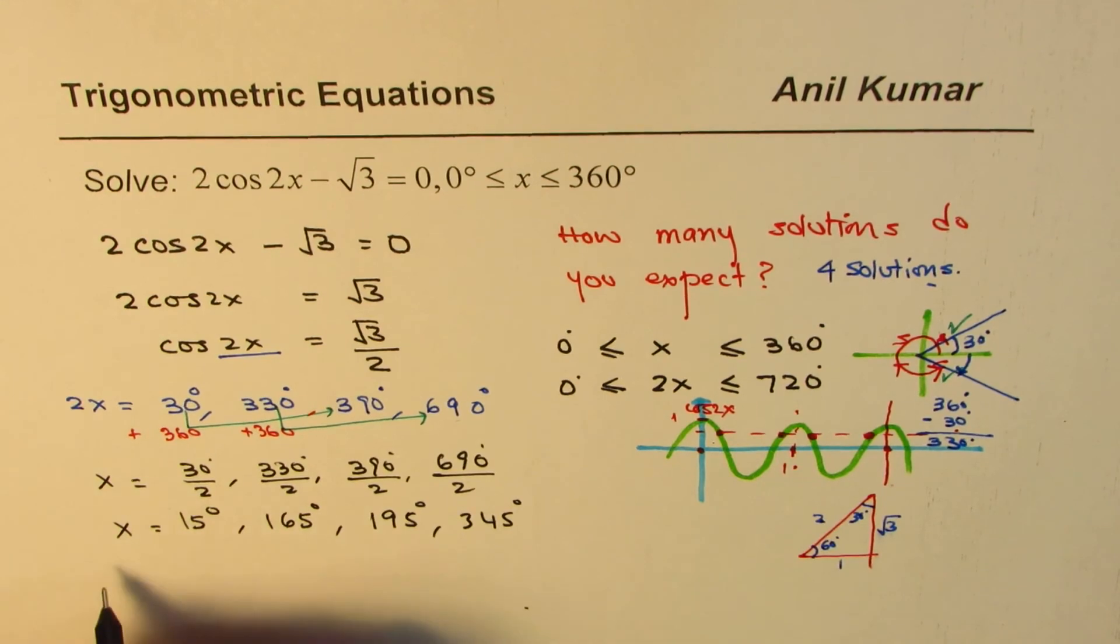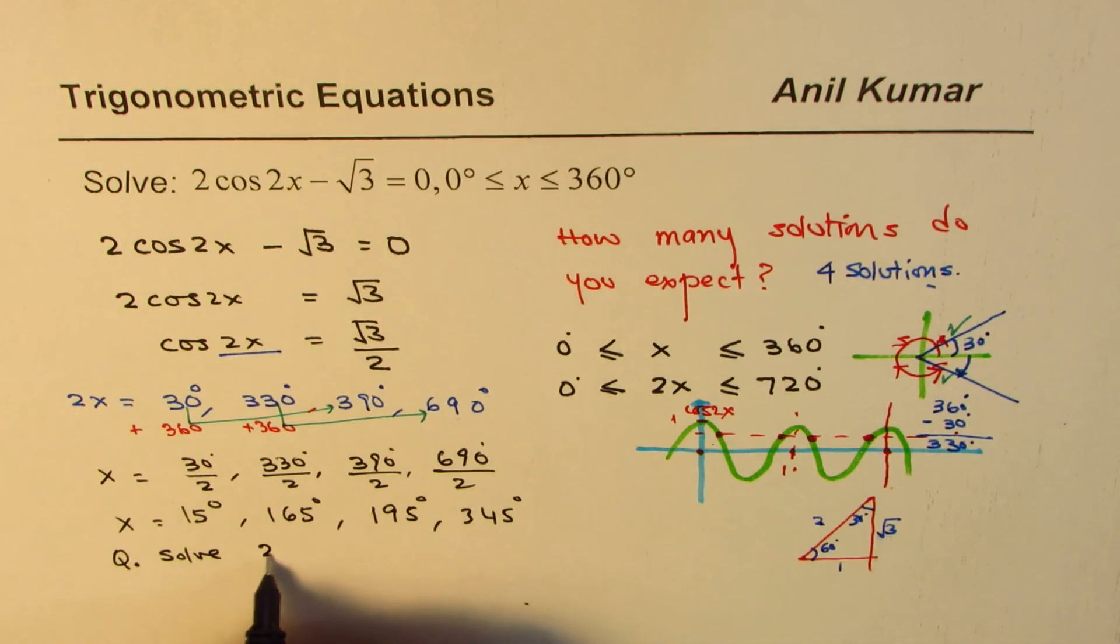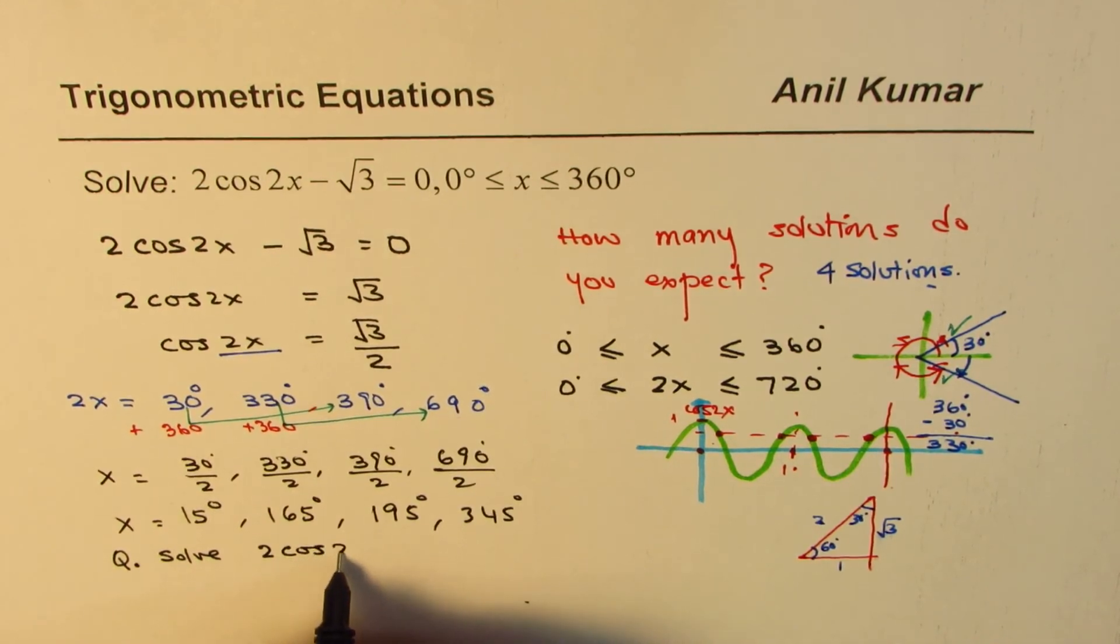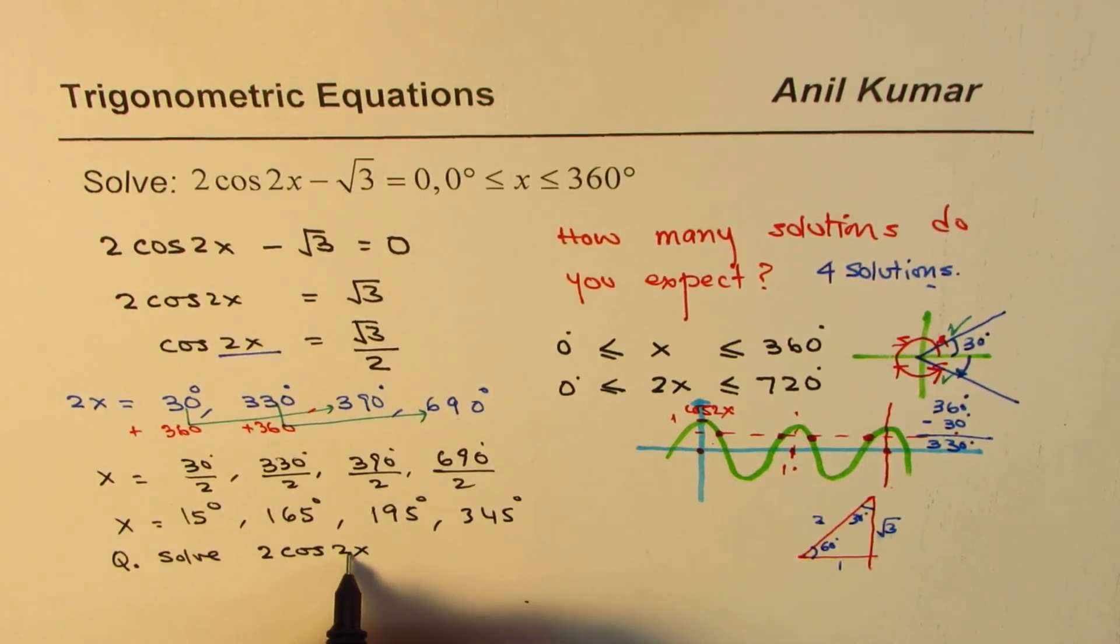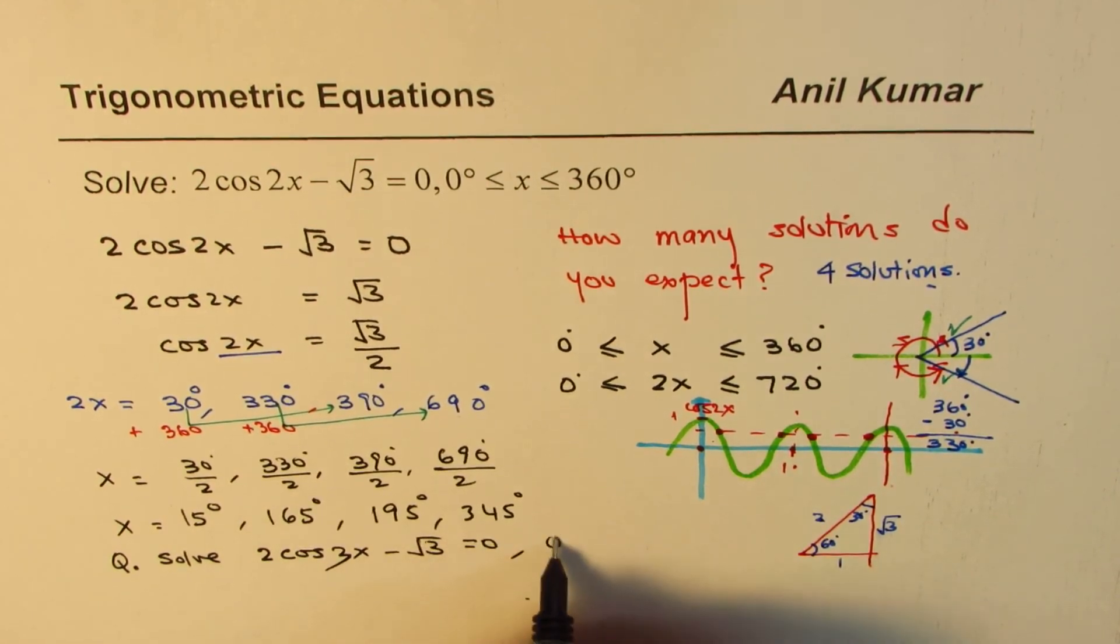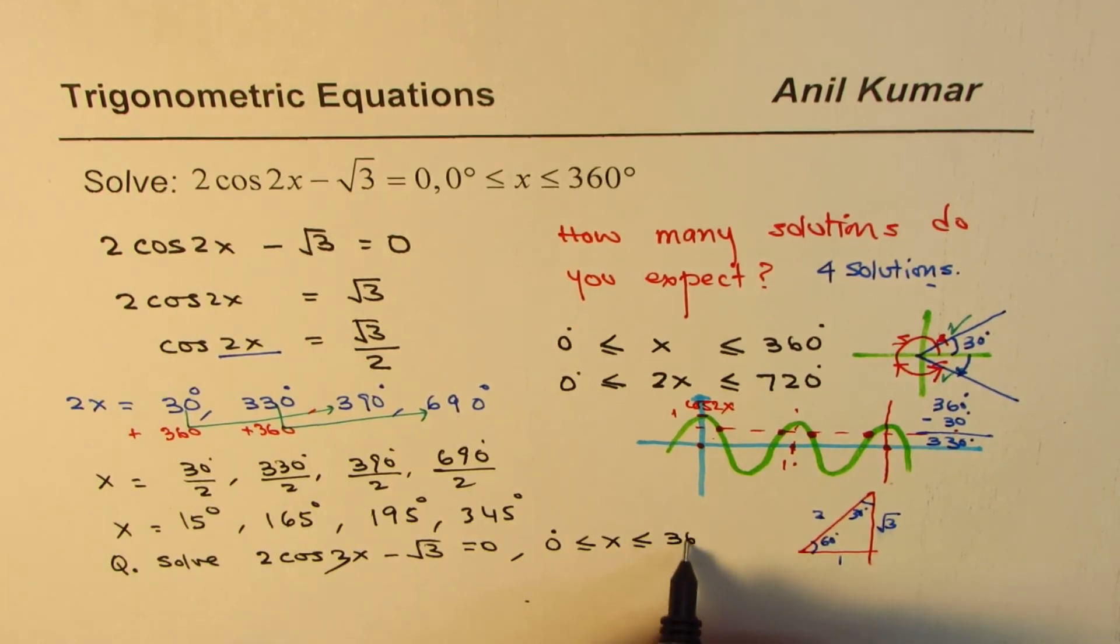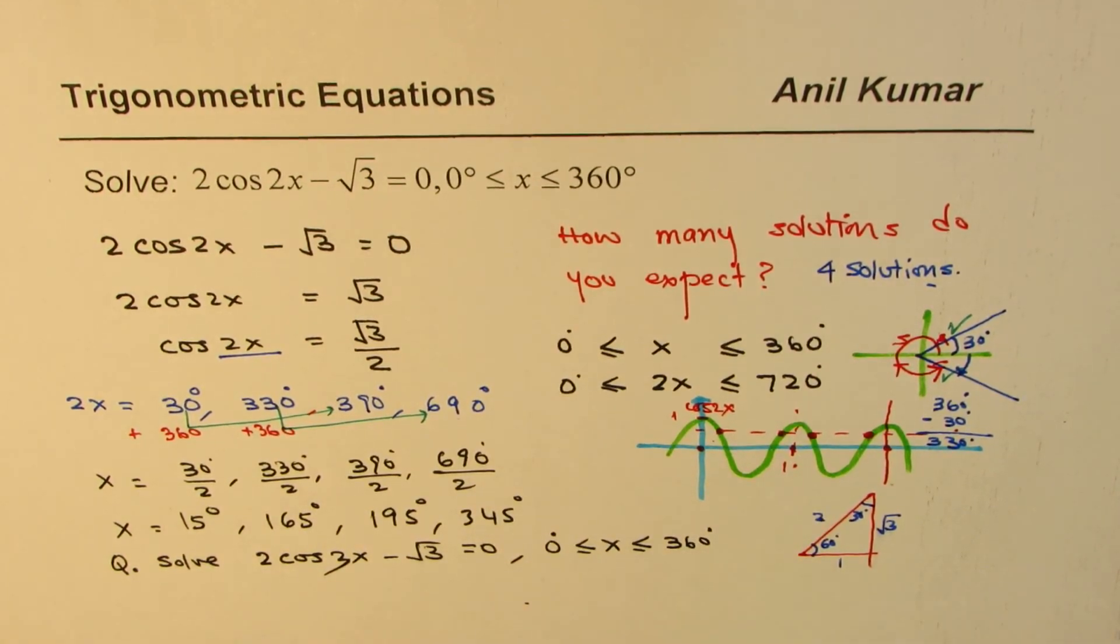I'm not changing the question. I'm keeping it same. But instead of 2, I'm making 3. Minus square root 3 equals to 0 for the domain between 0 and 360 degrees. So let this be the question for you.